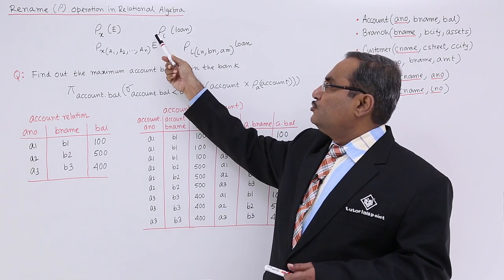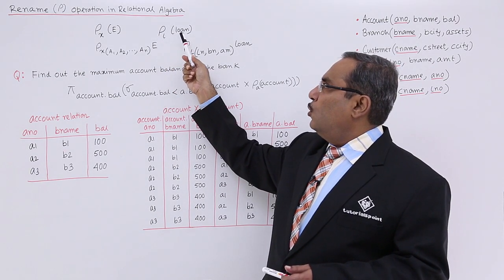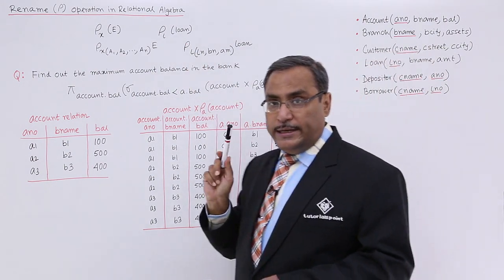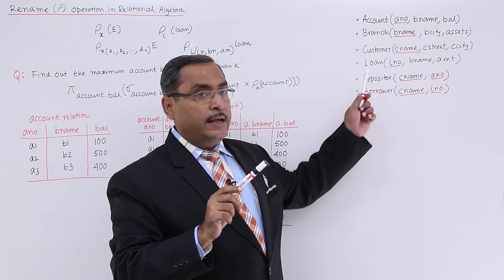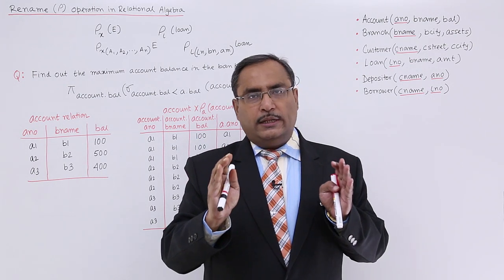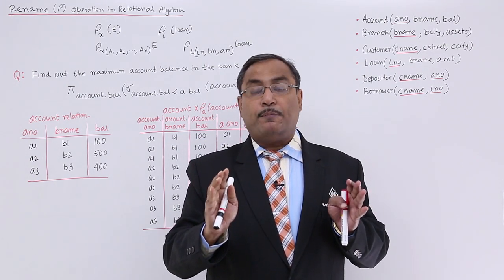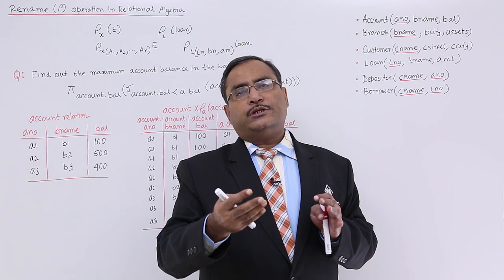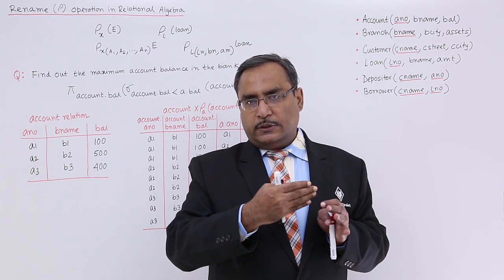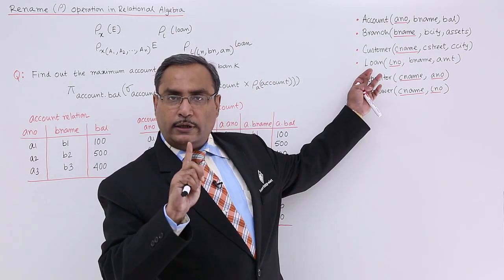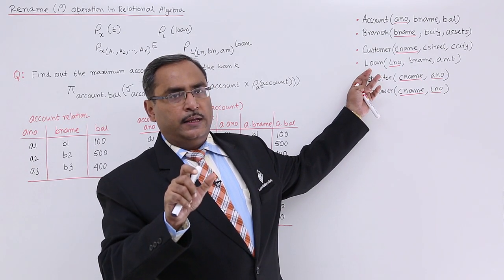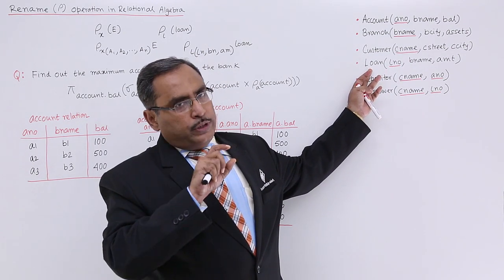As an example, I can write rho l loan — here loan is the actual relation name and it has been renamed as l within the query. The scope is within the query only; do not think that the relation is getting renamed permanently. Next time when we write another query on this schema, we shall be using loan, not l.